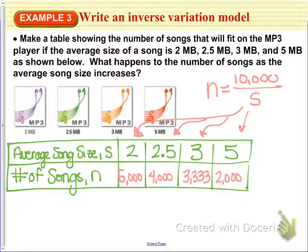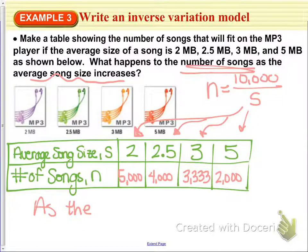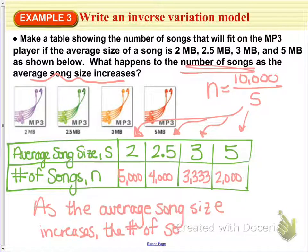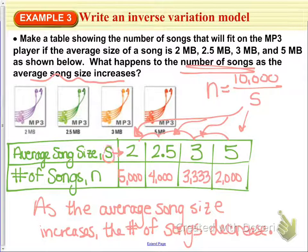As the average song size increases, the number of songs will decrease. That's what inverse variation is — as one value increases, your other value actually decreases. As your s values go up, your n values are decreasing, and that's why it is inverse variation.